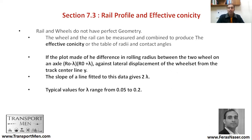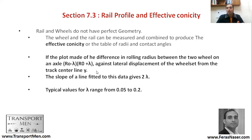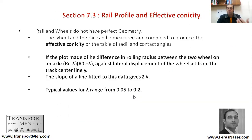Rail profile and effective conicity: the contact patch can be affected by the geometry of the rail and the profile. To measure both the rail and the wheel in the same way, people have developed the concept of effective conicity. Effective conicity is a measure between the wheel and the rail. If you plot the difference in rolling radius between the two wheels on an axle, it will be R₀ minus Lambda and R₀ plus Lambda. This effective conicity is measured as Lambda and referred to as two Lambda. Typical values of Lambda range between 0.05 and 0.2.